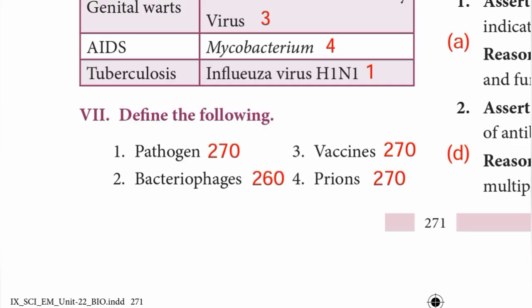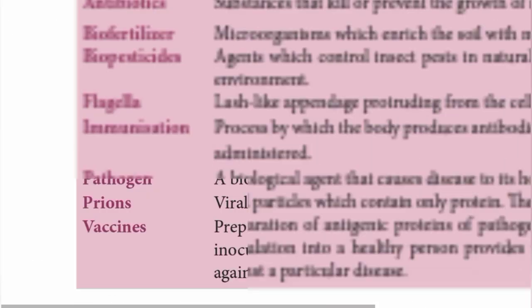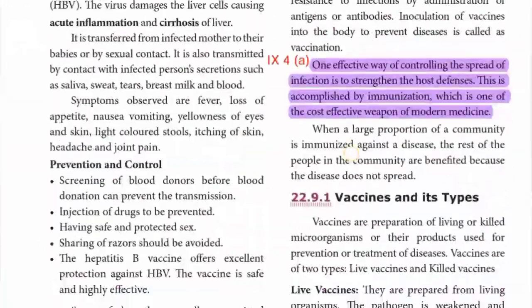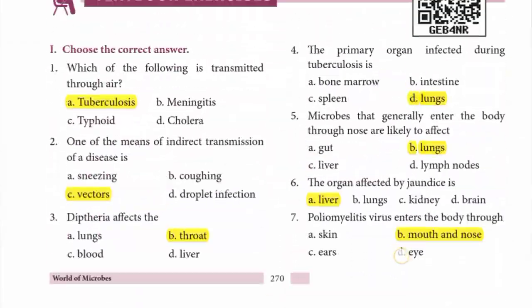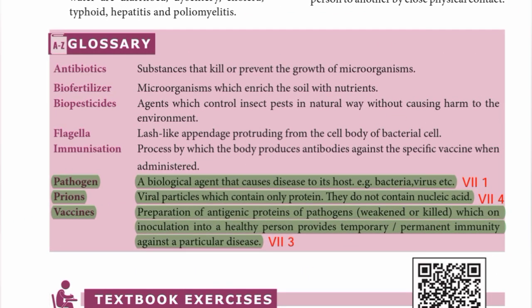Roman number seven: Define the following. First — Pathogen. Page number 270 glossary: A biological agent that causes disease to its host. Examples: bacteria, virus, etc.